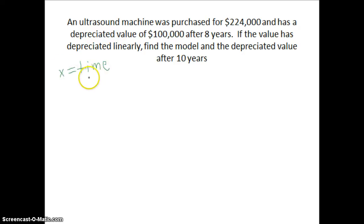Once we know the time, we can calculate the value. So our y values are going to stand for the value of this piece of machinery. Now I want to look for ordered pairs because ordered pairs can help me to find a line. My first ordered pair is that when time is zero, when the equipment is brand new, it has a value of $224,000.